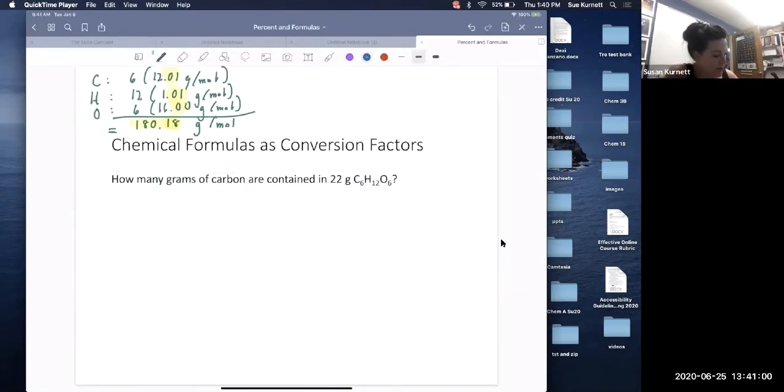So how many grams of carbon are in 22 grams of that sugar? Why don't we find a percent carbon in that sugar? So to do that, I would say, well, there's six moles of carbon in every one mole of this sugar. To make that into a percent, let me convert these to grams and then multiply by a hundred percent.